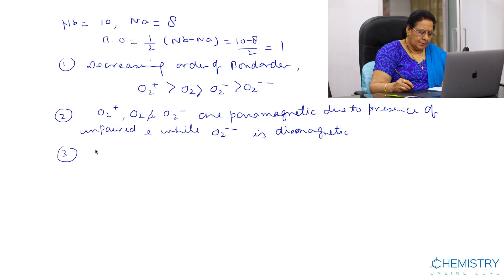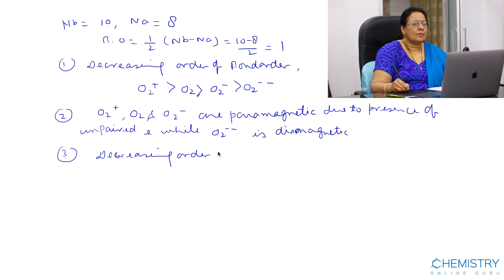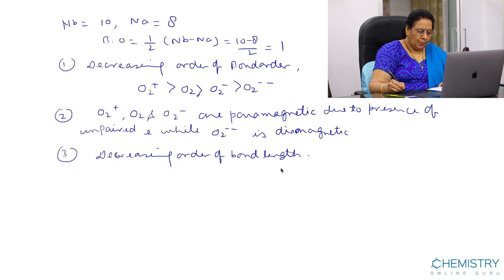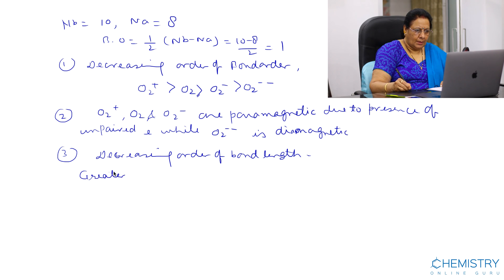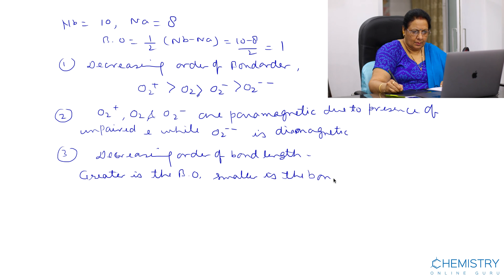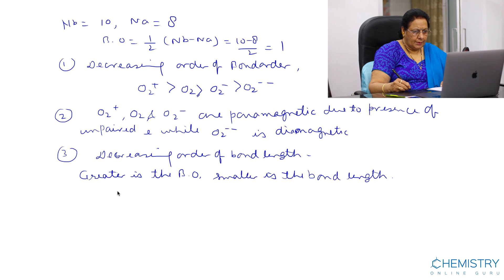The next important point is the decreasing order of bond length. Bond order is inversely proportional to bond length, so greater bond order means smaller bond length. Therefore, the decreasing order of bond length is: O2(2-) > O2- > O2 > O2+.